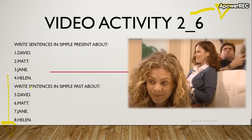You are going to write sentences in simple present about David — one sentence for David. Number two, the sentence format. Number three, Jane. Number four, Helen. So David, for example: David is at home.